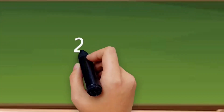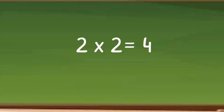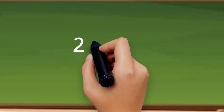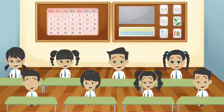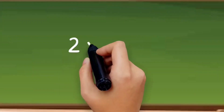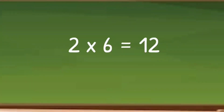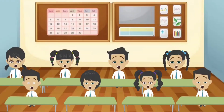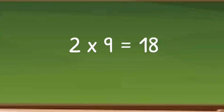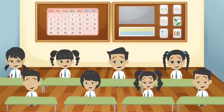Let's do table of 2. 2 ones are 2. 2 twos are 4. 2 threes are 6. 2 fours are 8. 2 fives are 10. 2 sixes are 12. 2 sevens are 14. 2 eights are 16. 2 nines are 18. 2 tens are 20.